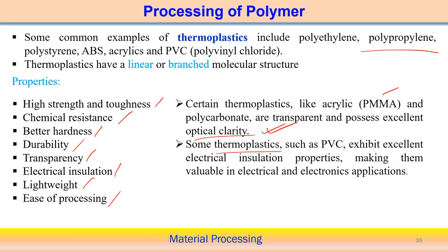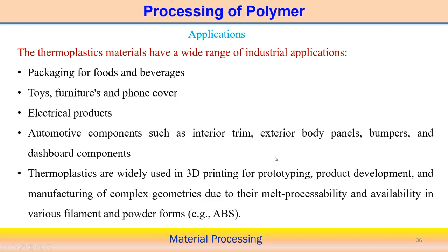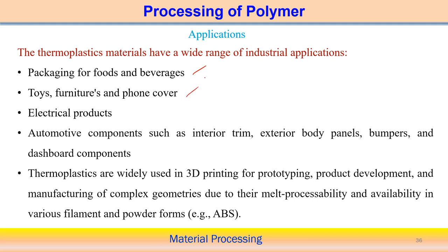Certain thermoplastics, such as PVC, provide excellent electrical insulation properties, which is why they can be utilized as insulators in electrical and electronics applications. Thermoplastics have a wide range of industrial applications including the packaging industry for foods and beverages, toy manufacturing, furniture, phone covers, electrical products, and automotive components such as interior trim, exterior body panels, bumpers, and dashboard components.